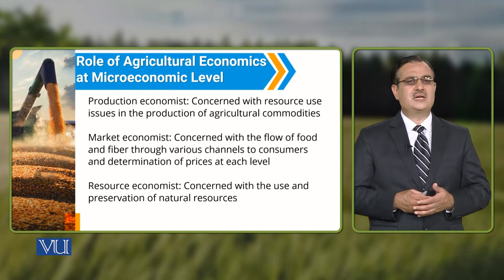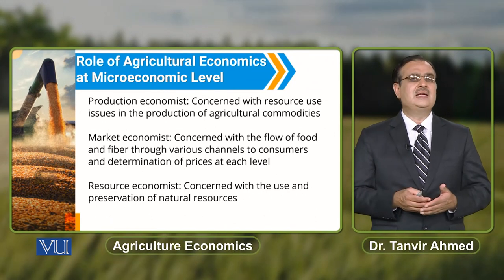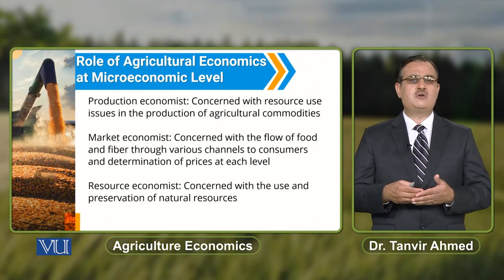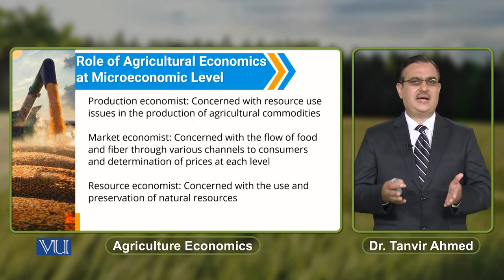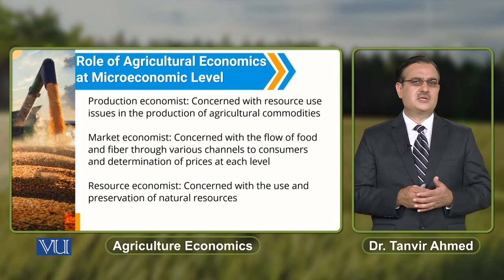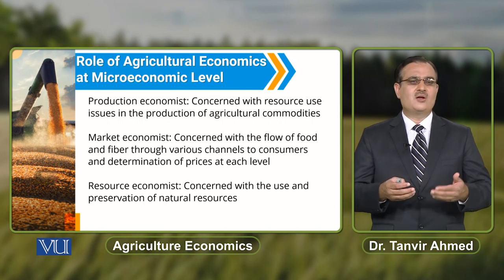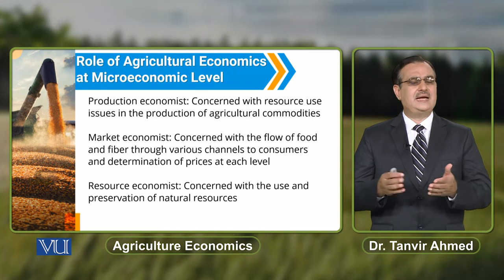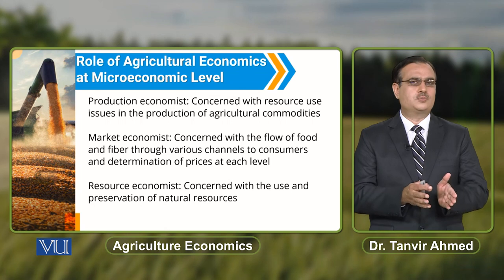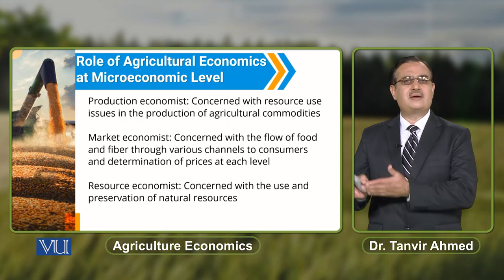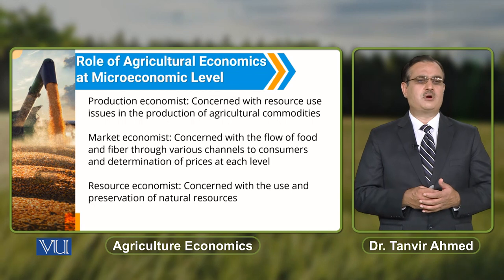How to produce livestock, crops, and vegetables — on the basis of the prices of output and input — and since the objective of the farmer is to maximize profit, the production economist can help the farmer to choose the right output by using the right quantity of input to maximize his profit.